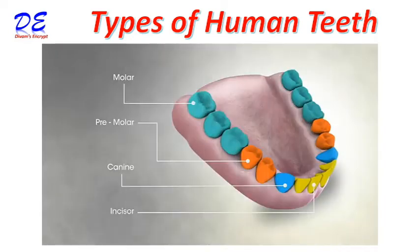There are mainly four types of human teeth: molar, premolar, canine, and incisor. You can see here a structure of human teeth. Let's learn about each type of teeth.